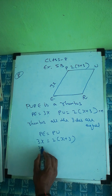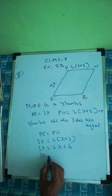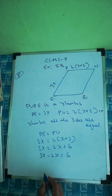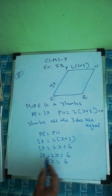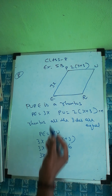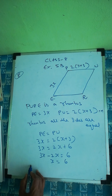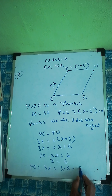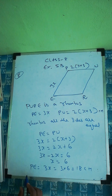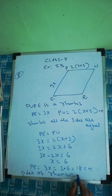So 3x equals 2x plus 6, therefore 3x minus 2x equals 6, so x equals 6. Now since all sides of the rhombus are equal, we take PE equal to 3x, that is 3 into 6 equals 18 centimeters.